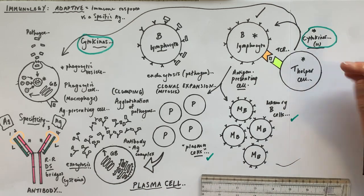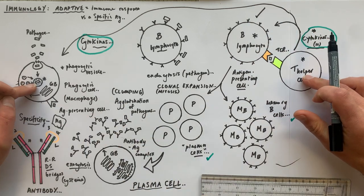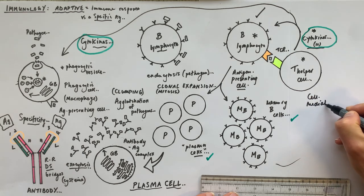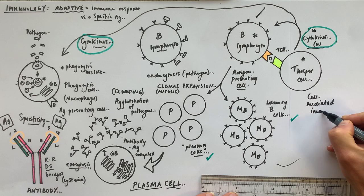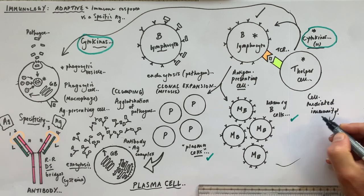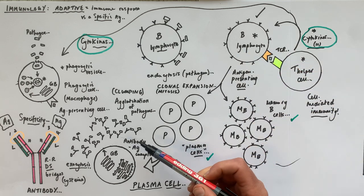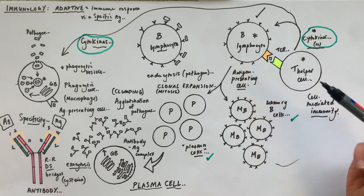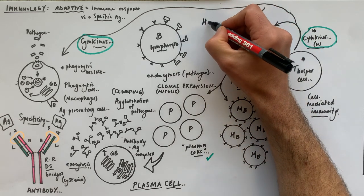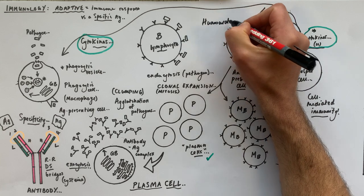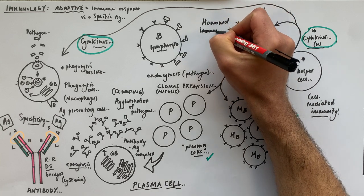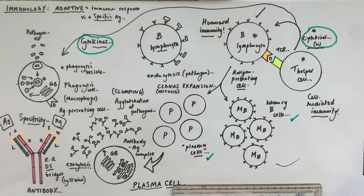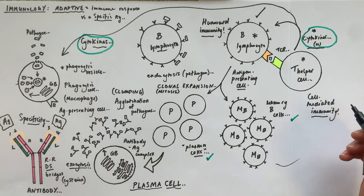The interaction of the T helper cell with the B lymphocyte and with the phagocytic cell is called cell-mediated immunity. The production of specific antibodies from the plasma cells, which result from clonal expansion of the B lymphocyte, is called the humoral response — humoral immunity.